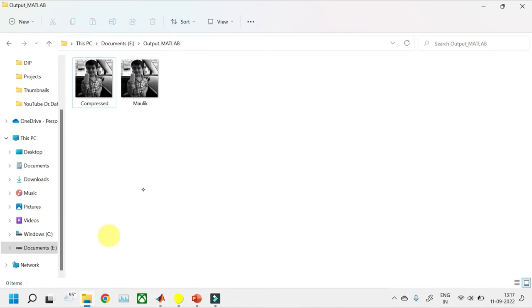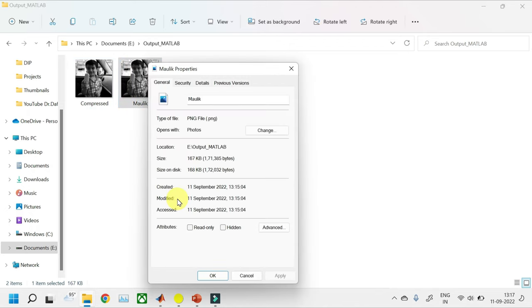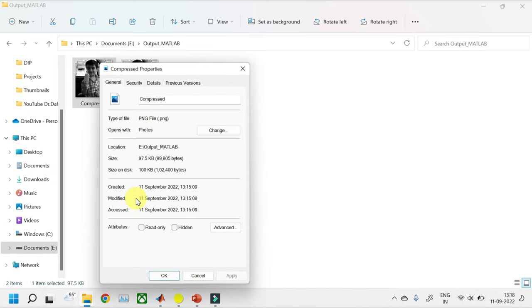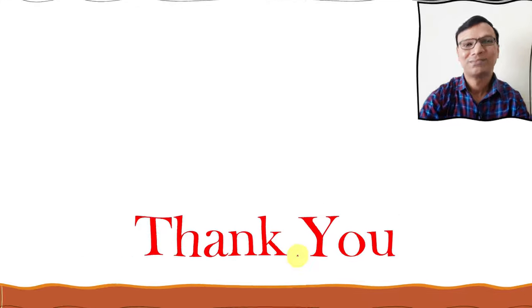And the folder where I have written my both the images is this. And let us see the properties of the original image. It is 167 KB and my compressed image is 97.5 KB. So the compression ratio which I am achieving is approximately 1.71 which is a very good compression ratio. So that is all for this video class. Thank you very much.